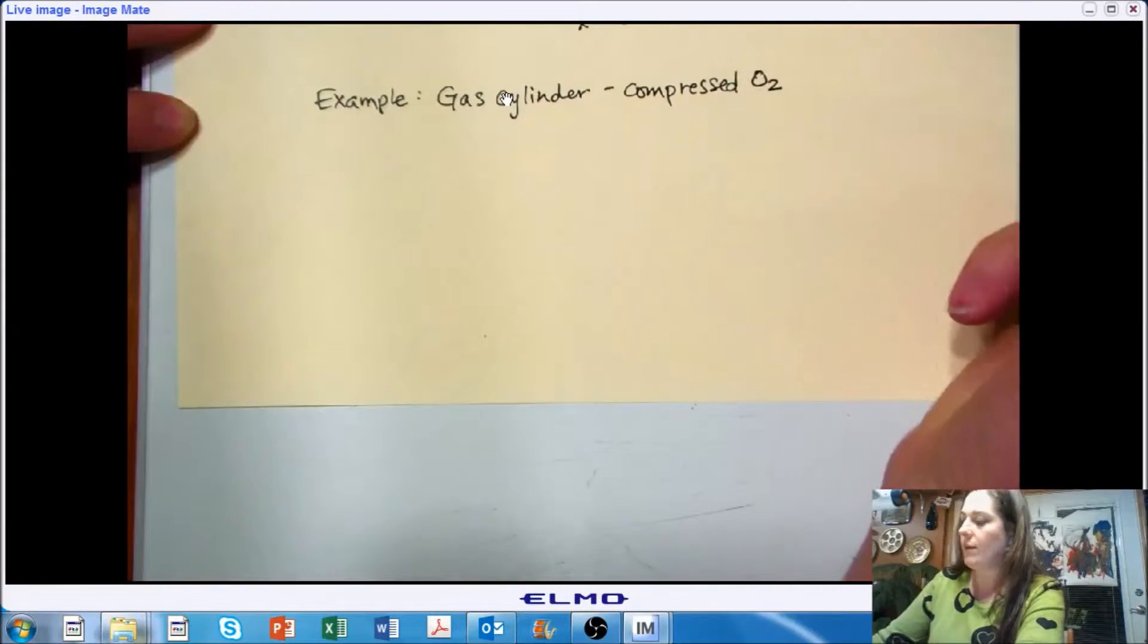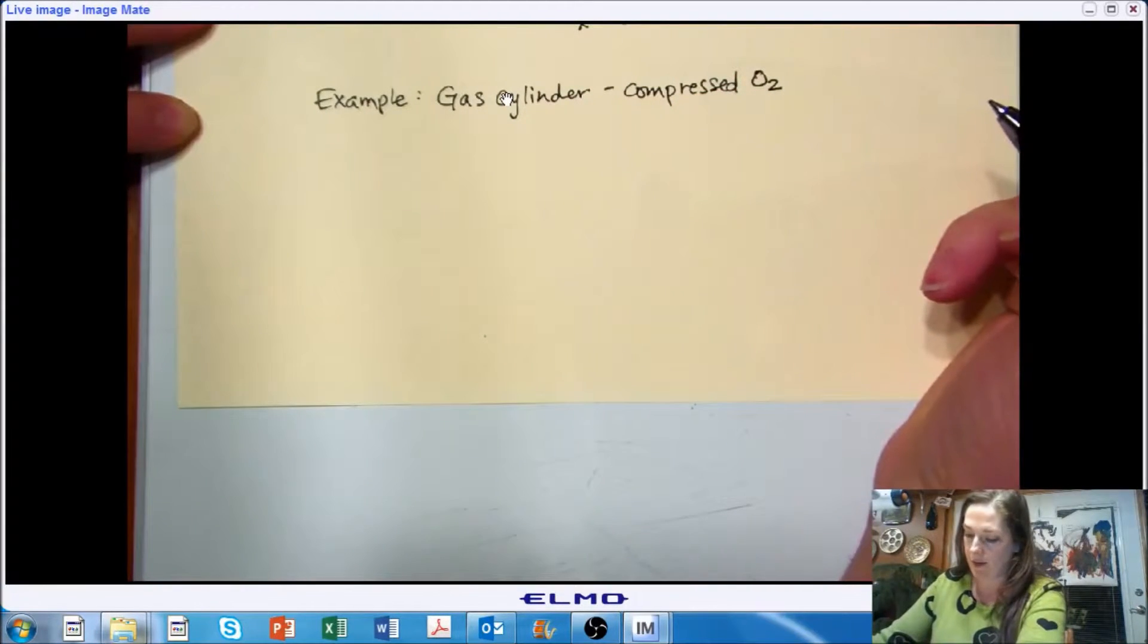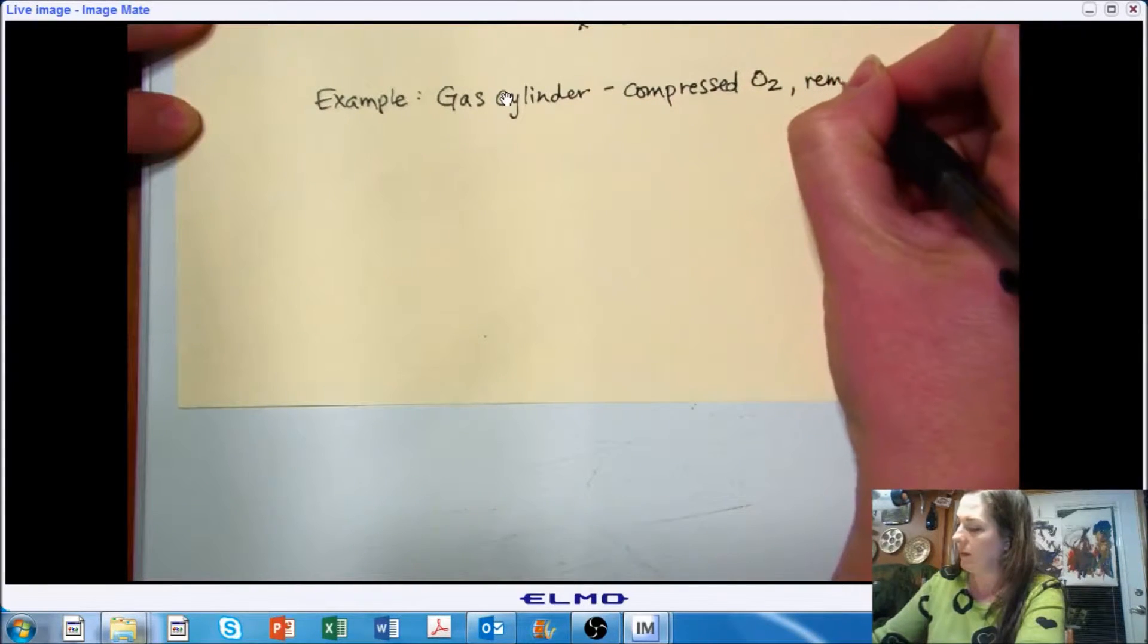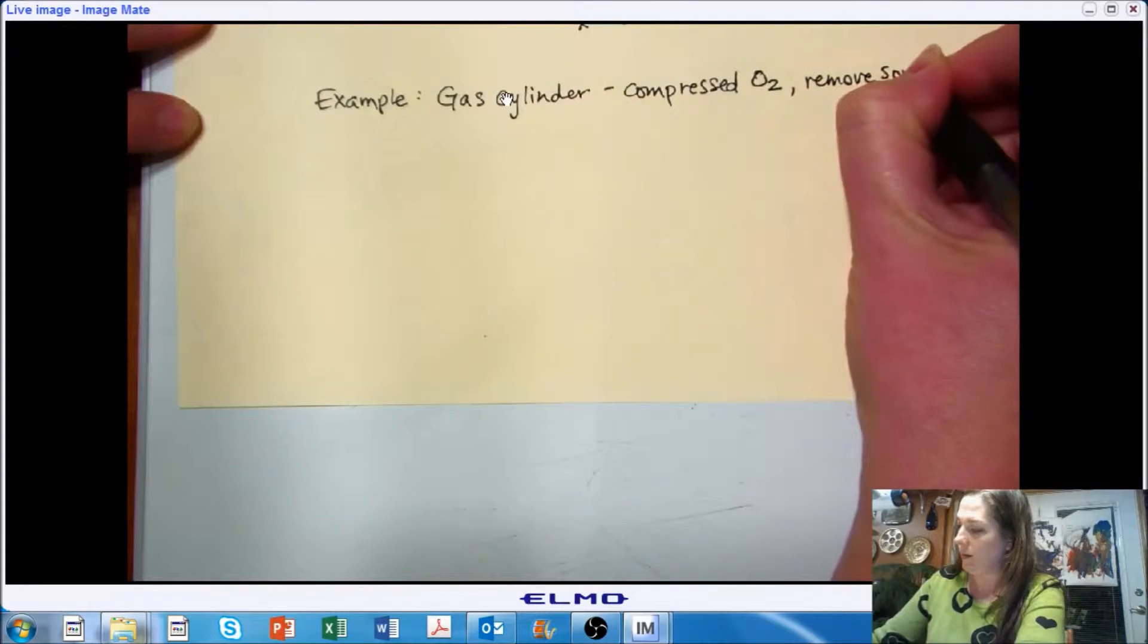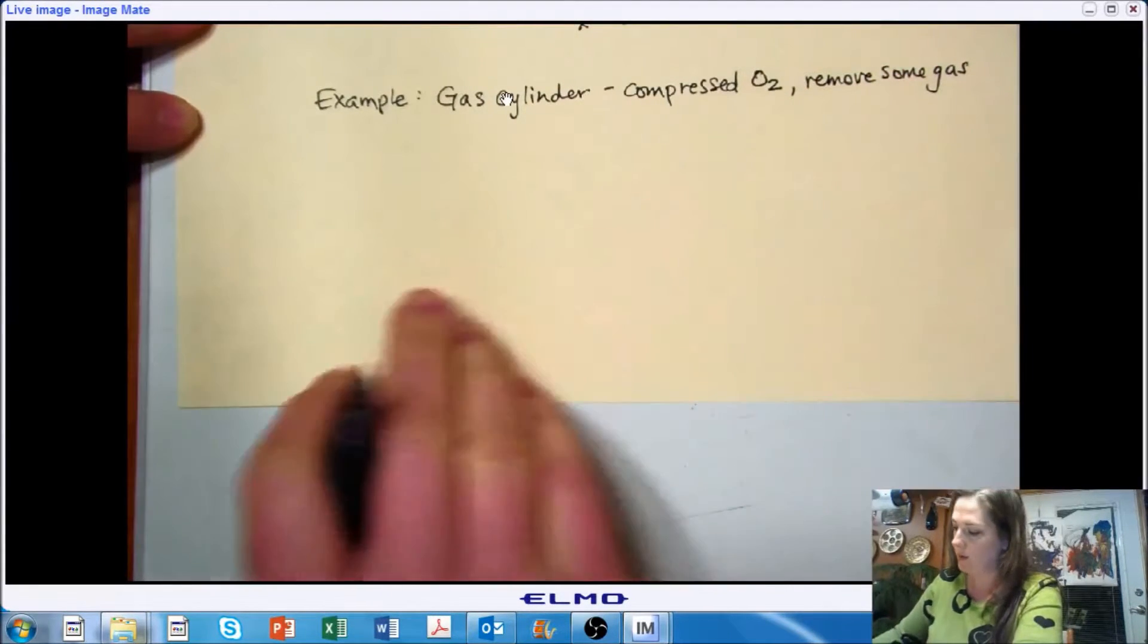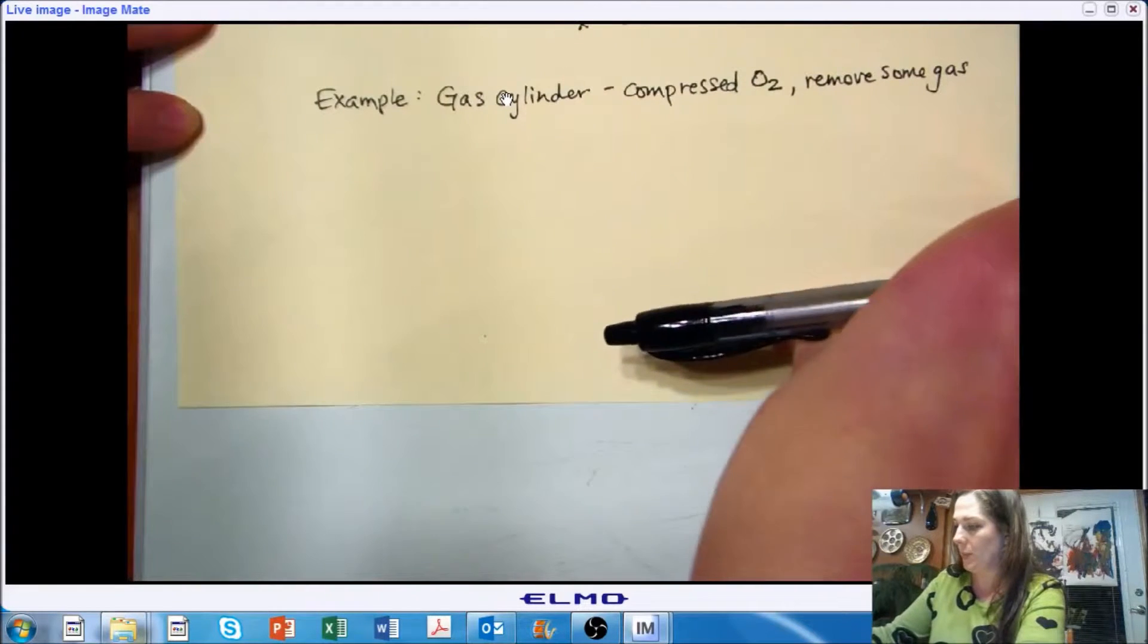So we have a compressed gas cylinder containing oxygen. And we're going to remove some gas from this cylinder. So essentially we're going to exhaust it to our room.